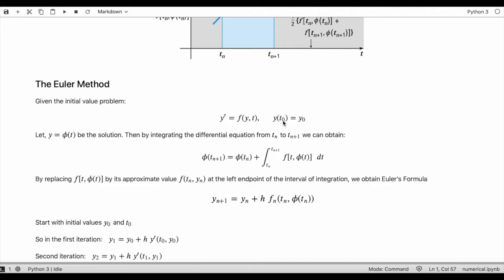We assume that y equals phi(t) be the solution of this first-order differential equation. Then by integrating the differential equation from t_n to t_{n+1} we can obtain this solution and we are trying to approximate the solution.